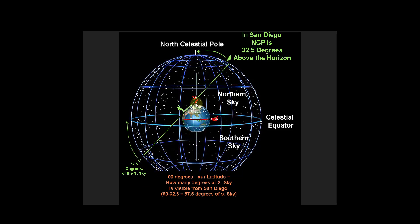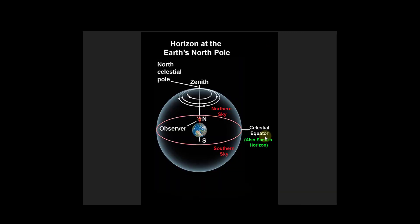From Santa's location at the North Pole, he sees 90 minus 90 equals zero degrees of the southern sky. From the equator, Santa sees 90 minus zero, which means 90 degrees of the southern sky — so all of the southern sky is visible to Santa at the equator.